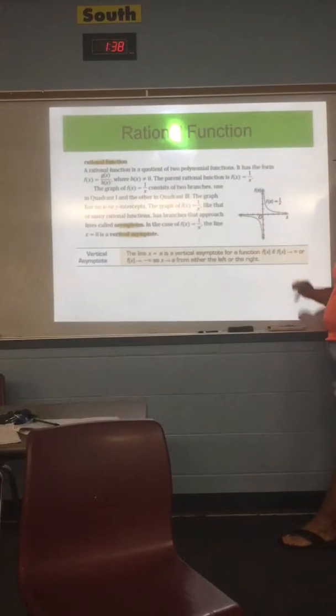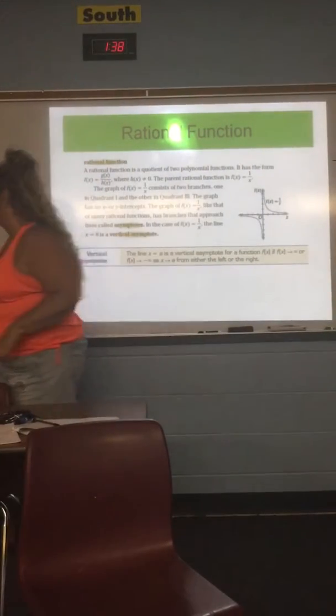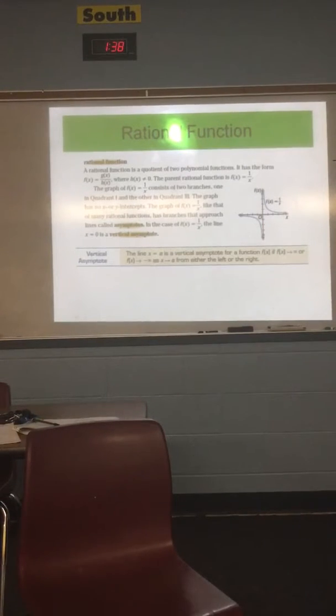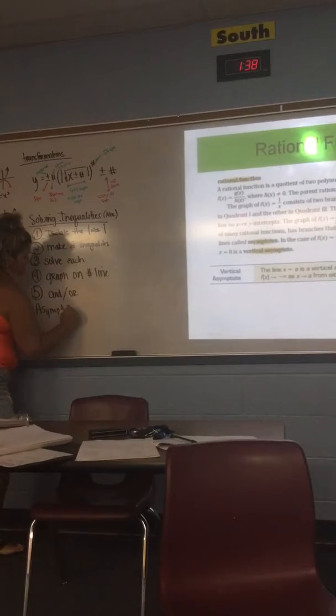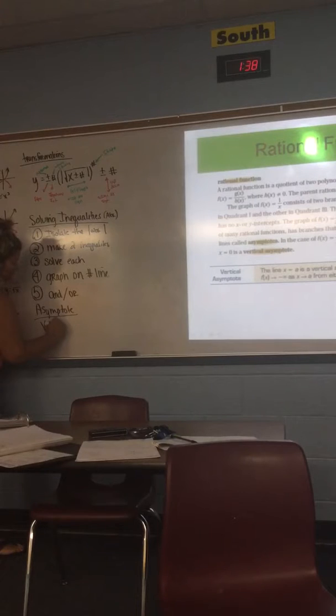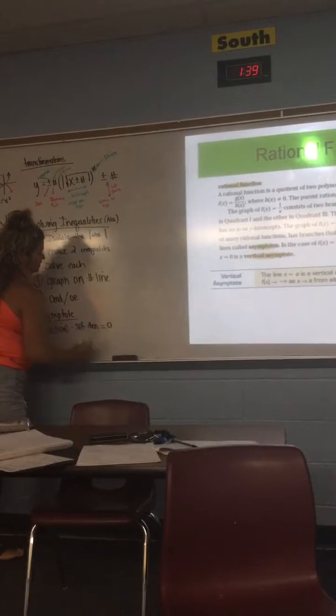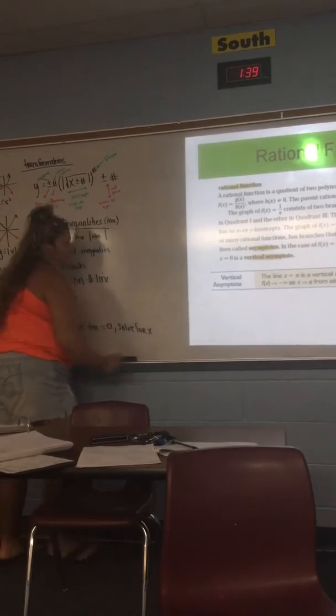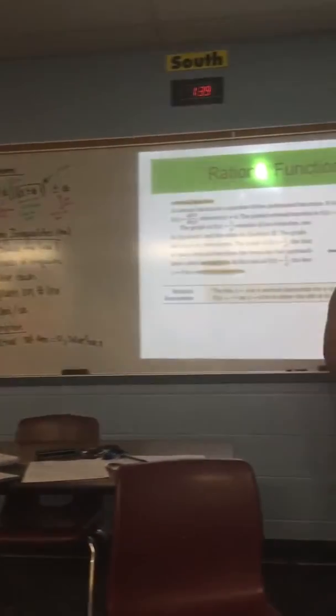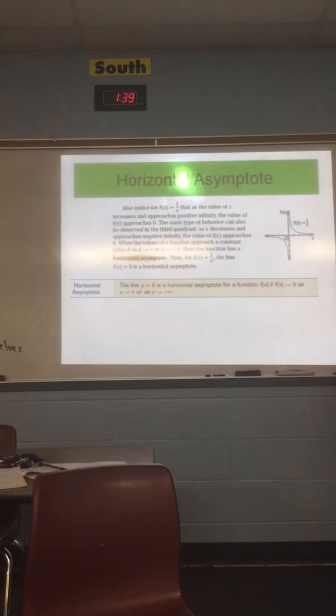So, vertical asymptote. Does anybody remember how we find a vertical asymptote? Set the denominator equal to zero. So, I'm going to add this over here to our asymptote list. Okay, so vertical set denominator equal to zero and solve for what? X. Solve for X. Okay, so go ahead and hit enter on the sheet.